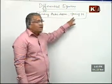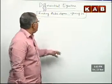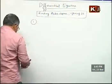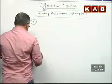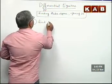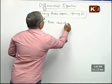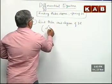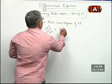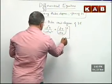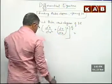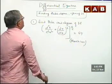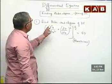Find the order and degree of the differential equation: d²y/dx² + (dy/dx)³ whole power 6/5 is equal to 6y. This is a March 2011 question for 2 marks. Find the order and degree of the given differential equation.